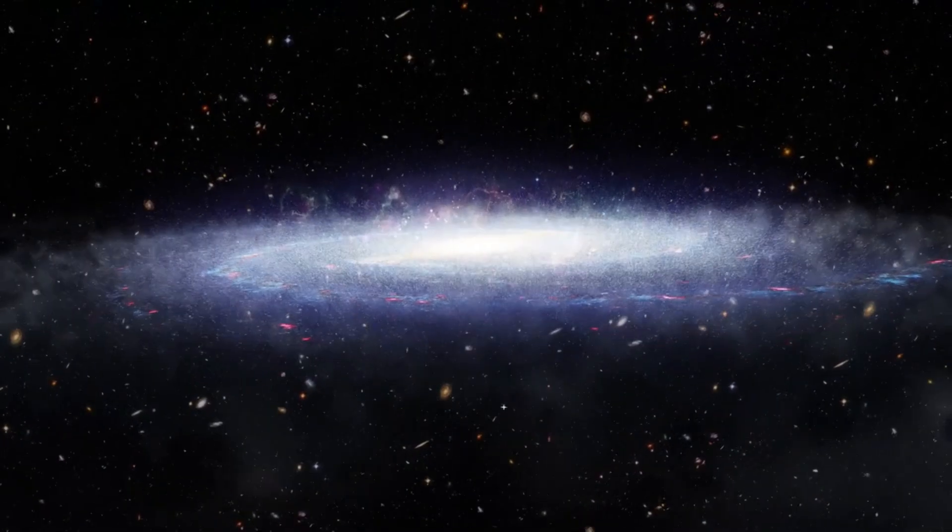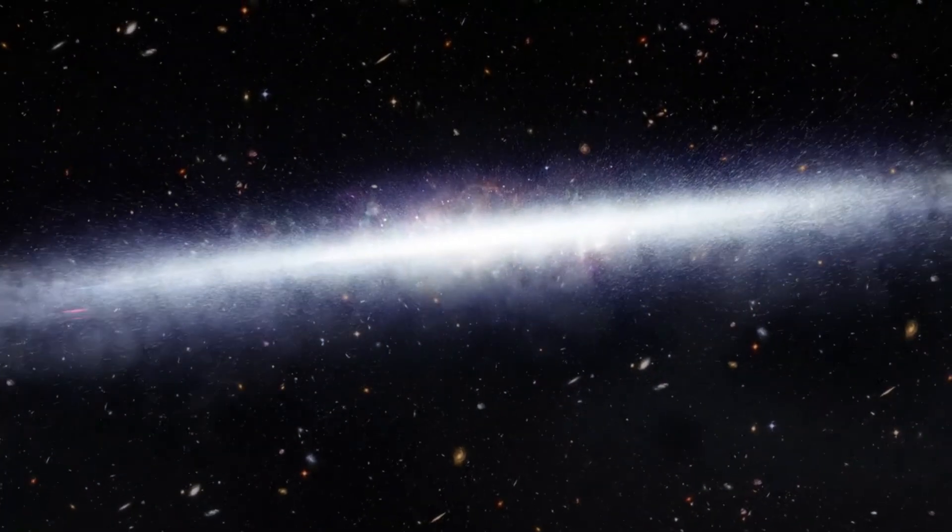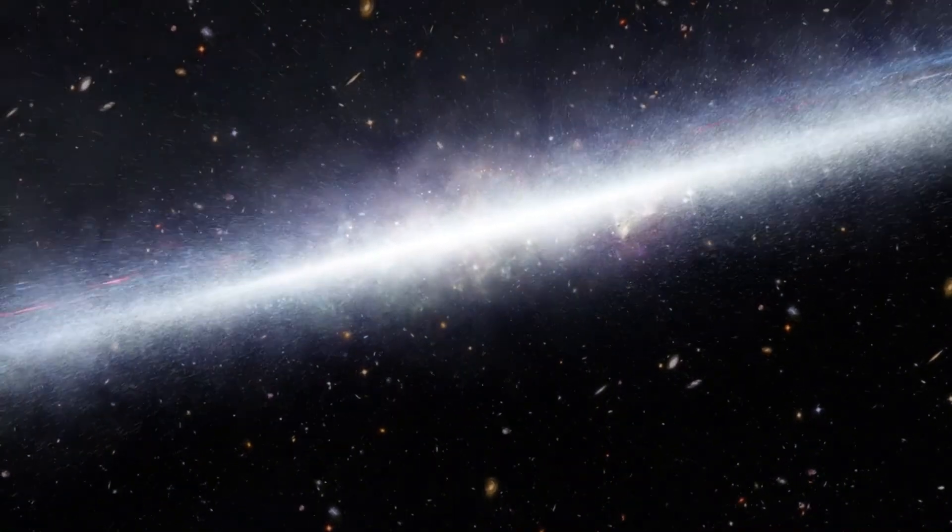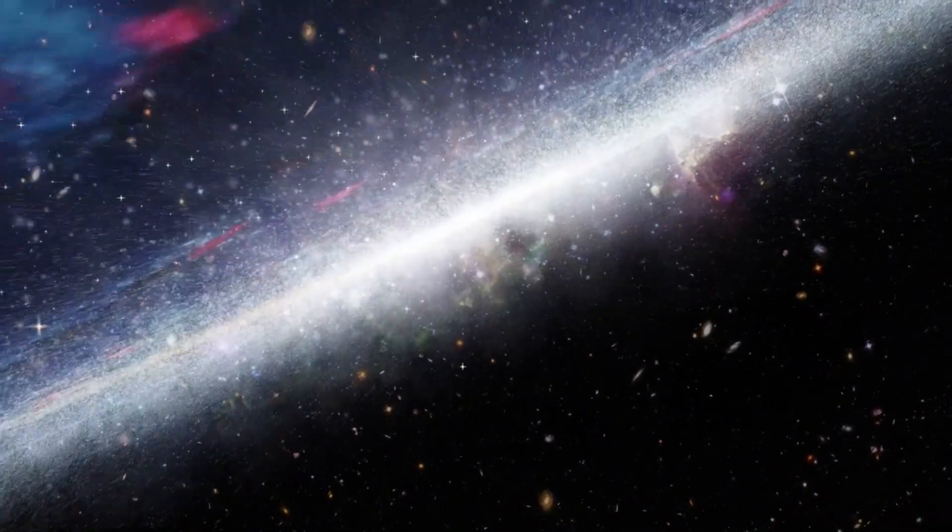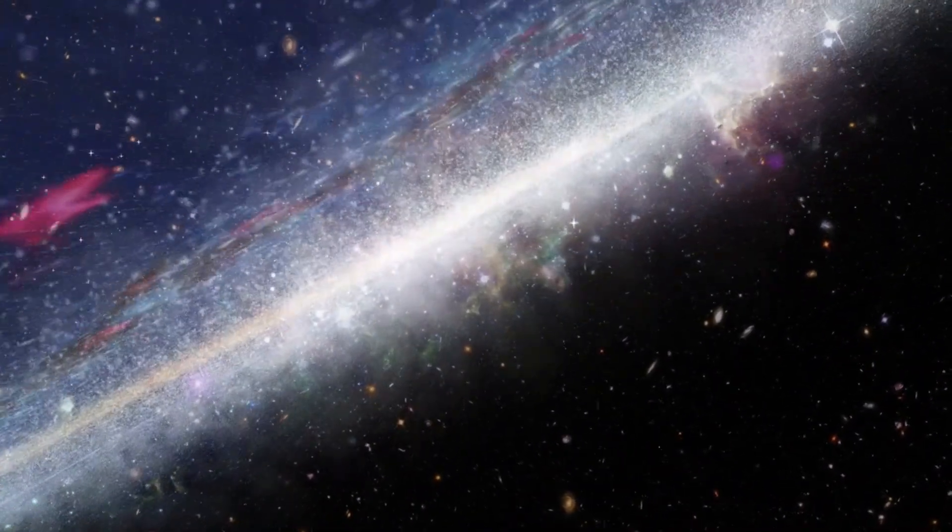Astronomers had expected Webb might find some small black holes just starting to feed. Instead, it uncovered a whole population of big, bulky, already active black holes tearing through surrounding gas clouds, stirring up those cyclonic signals we can now detect from Earth.